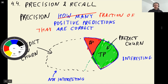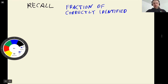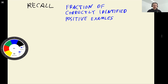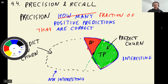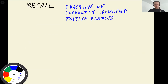Now let's talk about recall. Precision looks at the fraction of positive predictions that are correct. Recall is a bit different: instead of looking at positive predictions that are correct, we look at the fraction of churning users that we identified correctly — the fraction of positive examples. So here, in the case of precision, we looked at customers for whom we made a positive prediction. In the case of recall, we look at customers who are actually going to churn.